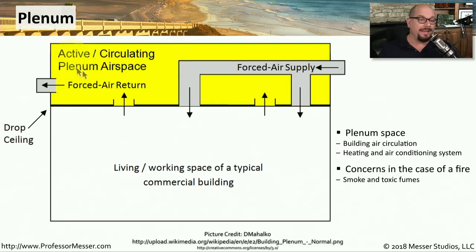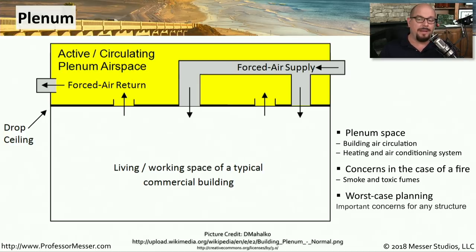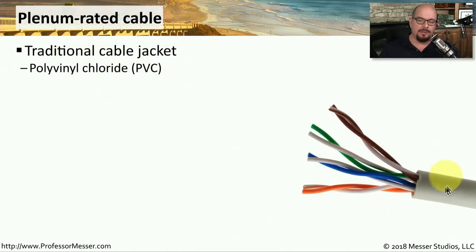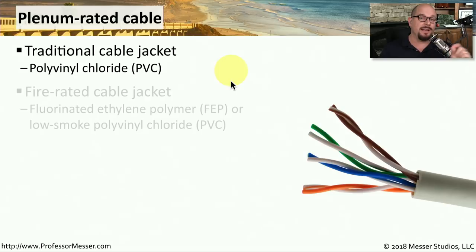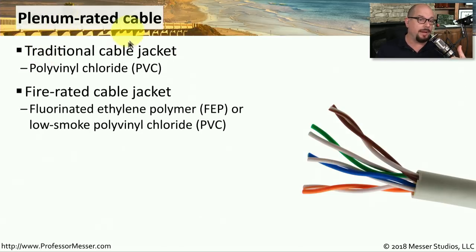This is obviously a concern from a fire perspective. If you have a fire that gets into the plenum and you have network cabling there, that network cabling could produce fumes that might be dangerous for people in the building. So your worst-case planning would be to think about what happens during one of those situations, and you want to be sure to have the proper network cabling if it's going to be in a plenum.